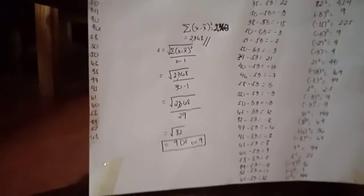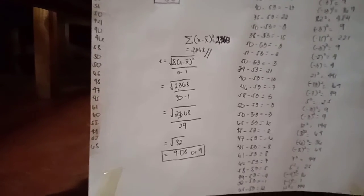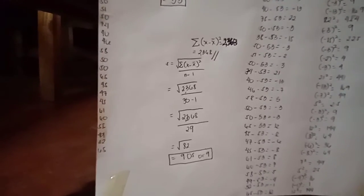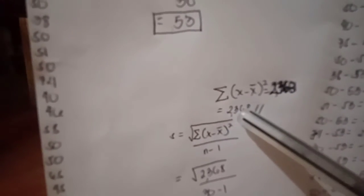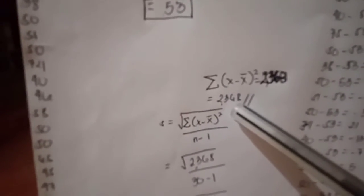Our numerator there will be taken from step 5, which is 2,368. While the denominator is 30 minus 1.